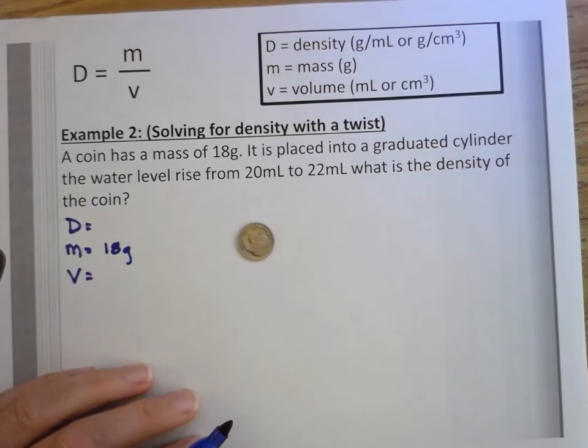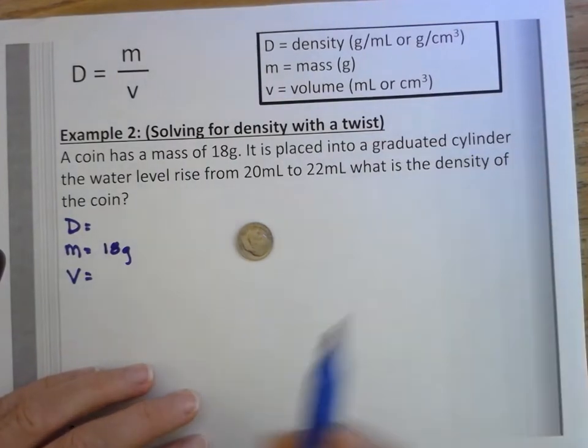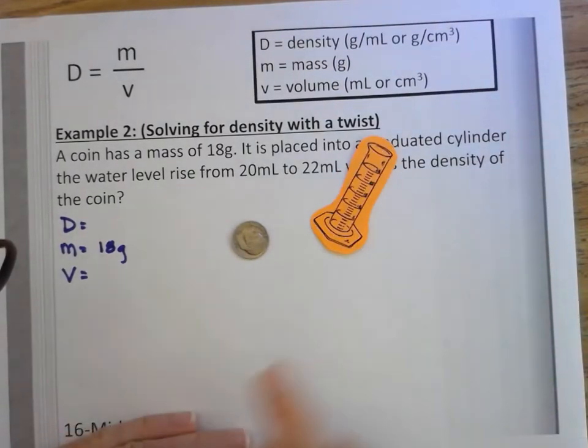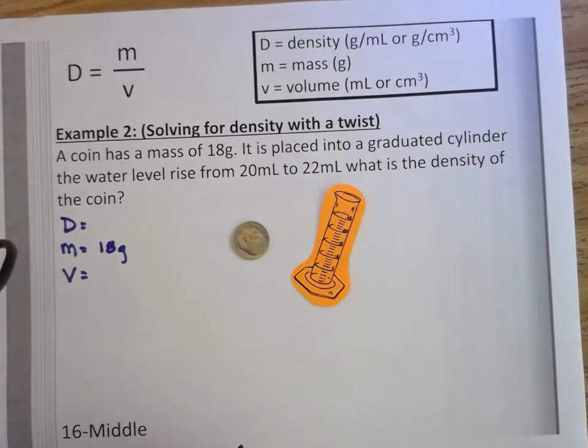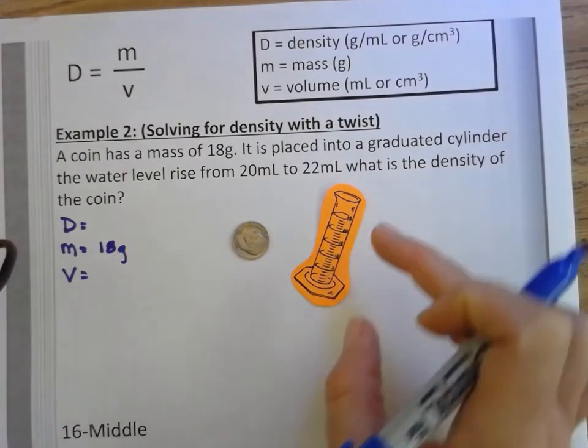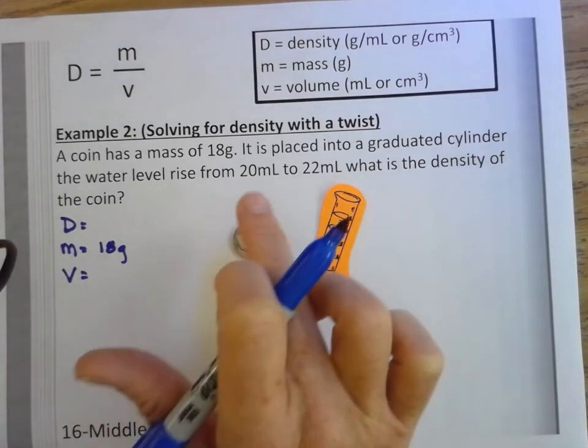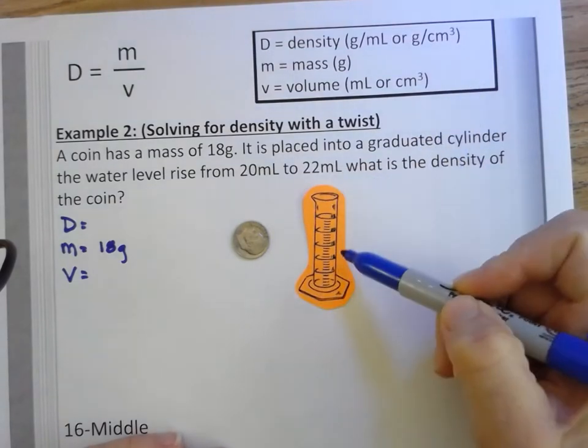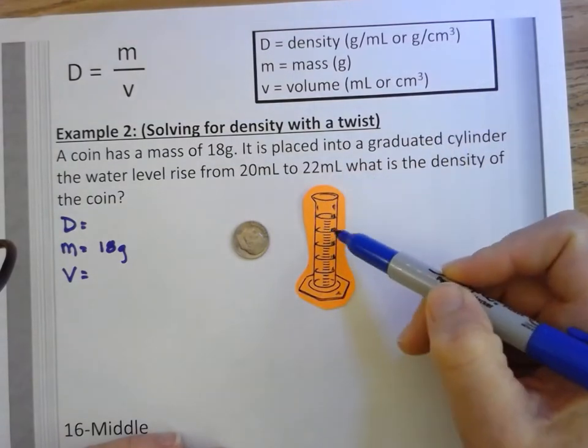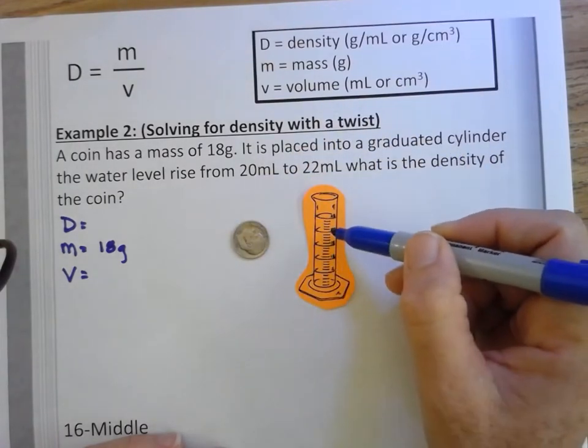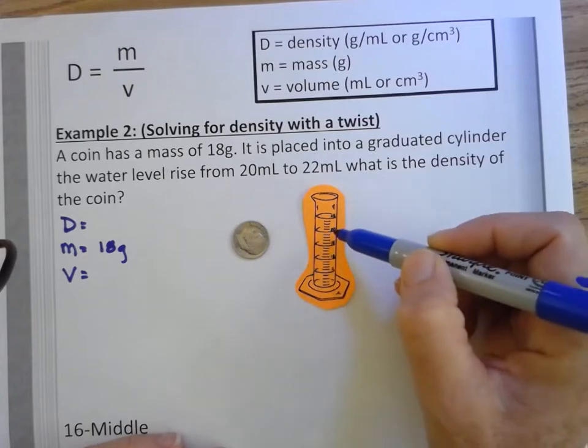It is placed into a graduated cylinder. Just in case we're not sure, here is what a graduated cylinder looks like and is used for measuring volume. This coin is placed into the graduated cylinder. The water level in this cylinder rises from 20 to 22 milliliters. That means that originally there was water in this graduated cylinder up to the 20 milliliter line. The coin is placed into this graduated cylinder, and because this coin has a volume, the water level rose up.